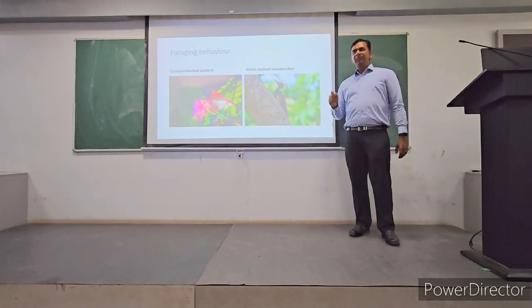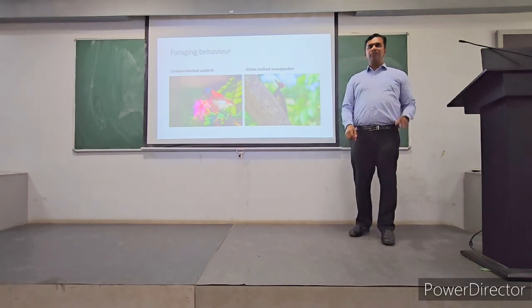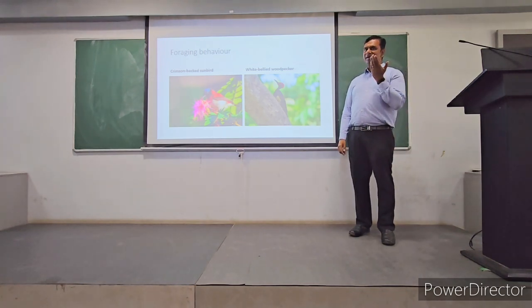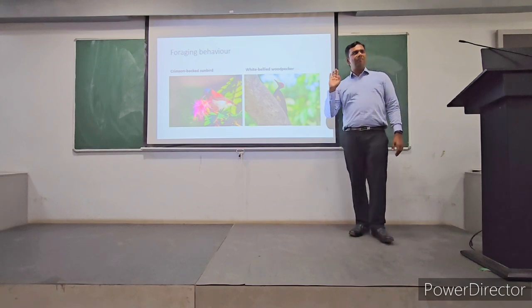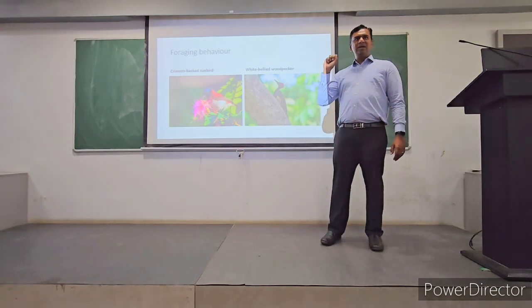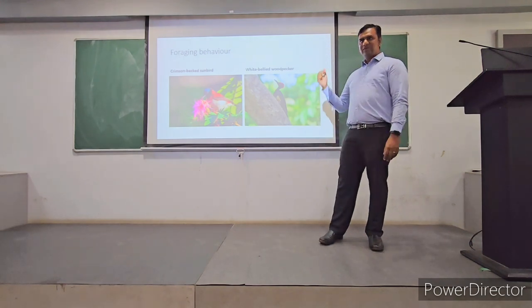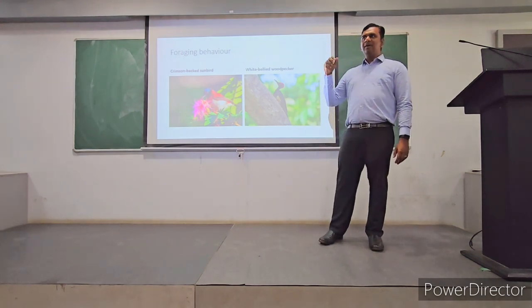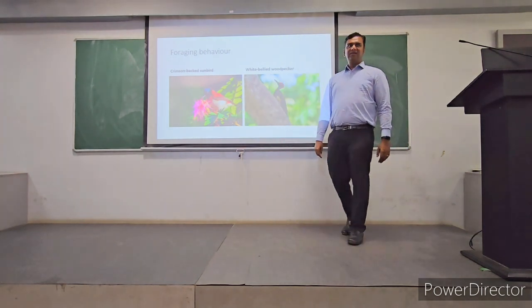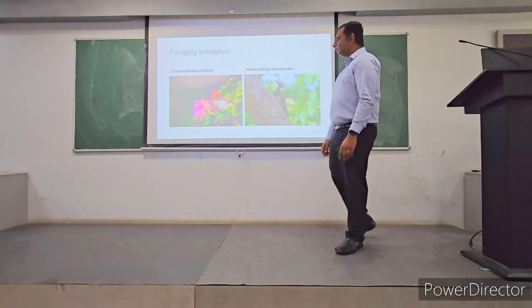We know that the shape of the beak determines what kind of food it eats. But there are also some other very peculiar behaviors pertaining to how they go about finding their food. What a woodpecker does is it knocks on the wood and then it listens to insects which are moving inside the wood. They listen for some sound underneath the wood and then start chiseling. They're not randomly chiseling.